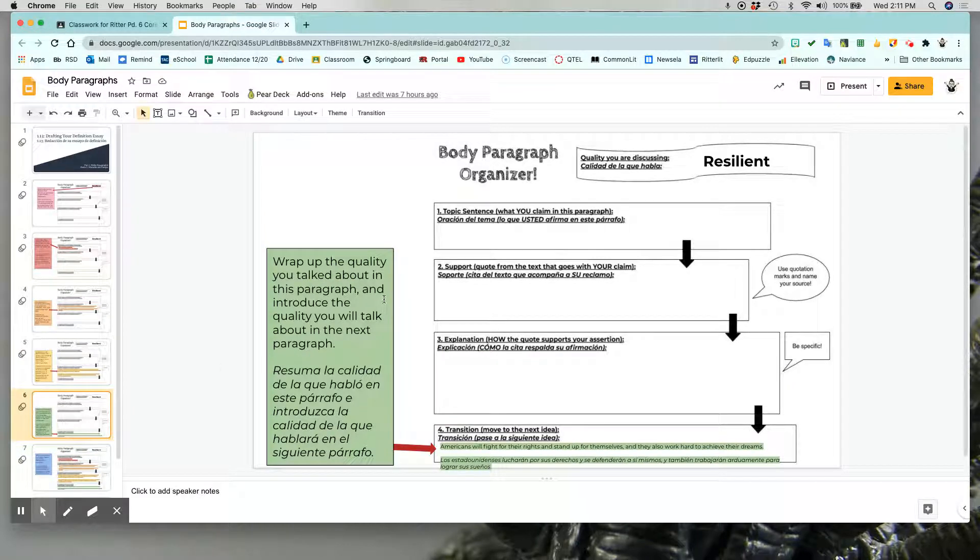And the last part of each body paragraph is a transition sentence. And all that is is a sentence that wraps up what you've been talking about in this paragraph and gives a hint of what you're talking about in the next one. So in this case, Americans will fight for their rights and stand up for themselves—that's summing up what I've said in here. And they also work hard to achieve their dreams. So that tells my reader that in the next paragraph I'm going to talk about working hard.